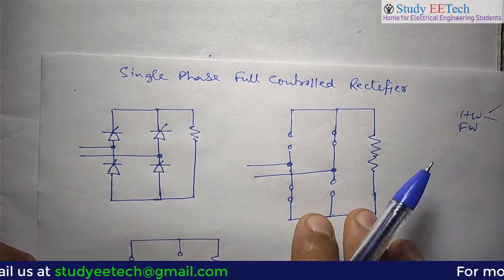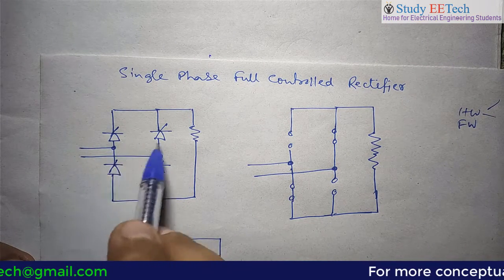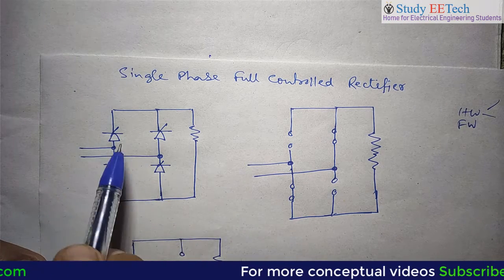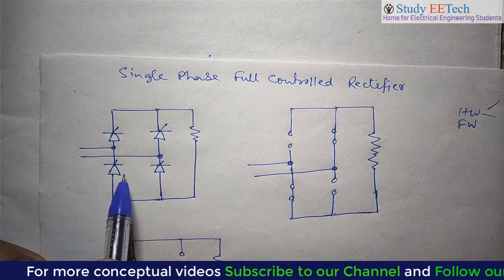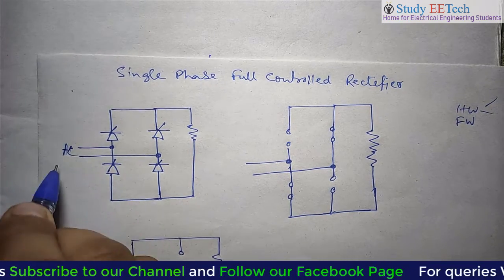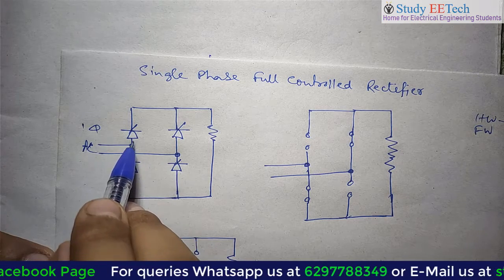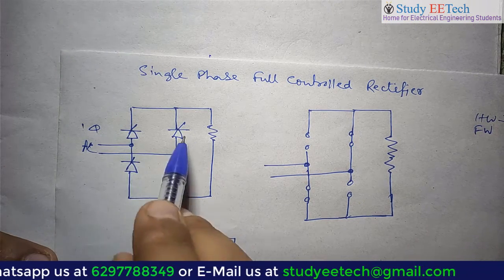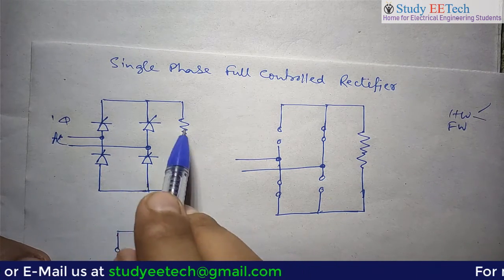So let us come to the point. The circuit is pretty simple. Two thyristors are connected in this way and two thyristors are connected in this way. We call this portion to be common cathode, and here in the lower portion there is common anode. The single-phase AC supply is given in between these two points — in between the anode and cathode of the first leg and the anode and cathode of the second leg. We have taken initially the resistive load.